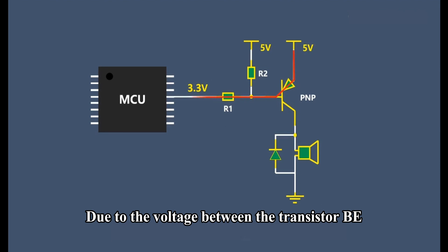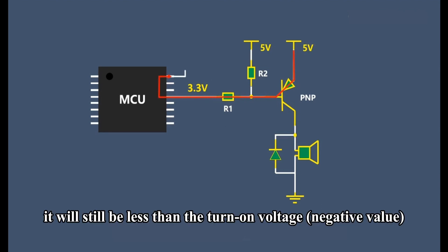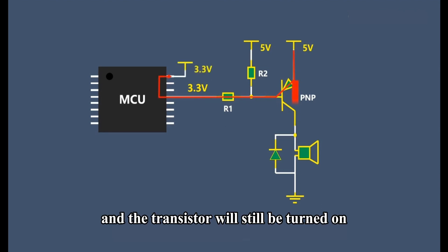Due to the voltage between the transistor base and emitter, it will still be less than the turn-on voltage, and the transistor will still be turned on.